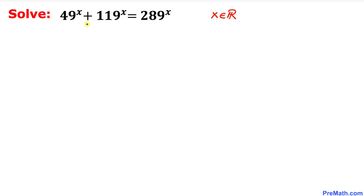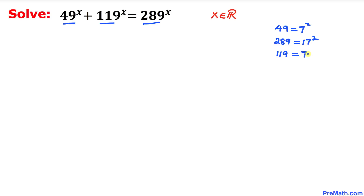The first thing we are going to do is focus on 49, 119, and 289. 49 can be written as 7 squared, 289 can be written as 17 squared, and likewise 119 is the same as 7 times 17.